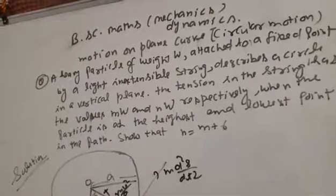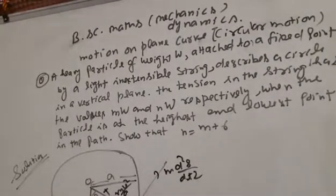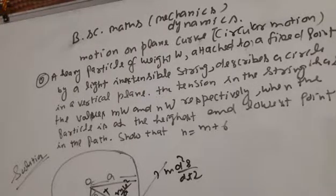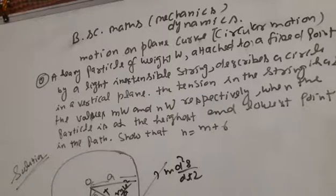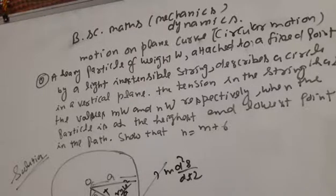BSc Math Mechanics Dynamics: Topics in Motion on the Plane Curve. Circular Motion Question: A heavy particle of weight W is attached to a fixed point by a light inextensible string. It describes a circle in a vertical plane. The tension in the string has values MW and NW respectively when the particle is at the highest and lowest points.